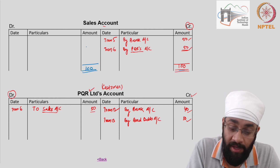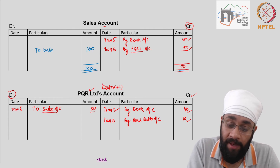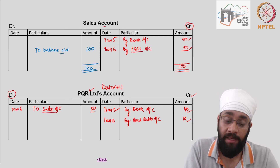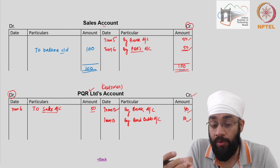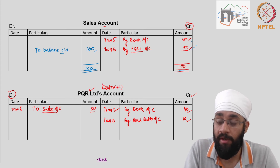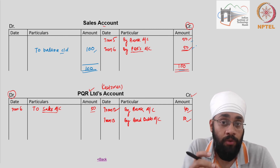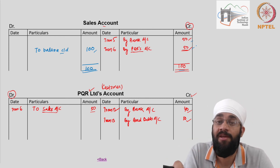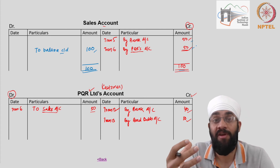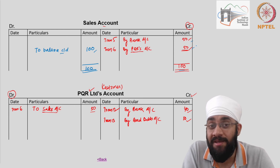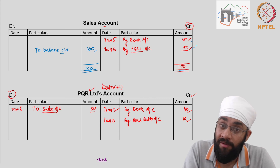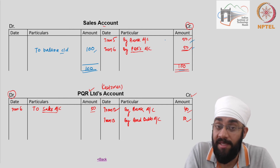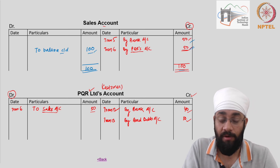For the sales account, you write 100 here as the total, sum up the debit side which is zero, and write the balance of 100 as 'to balance carried down.' This means after the 14 transactions the business conducted a total sale of 100 — part can be cash or credit, it doesn't matter. The accrual principle says: if you have transferred the goods and services and have a legal right to obtain money from the customer, you can consider this as sale, including credit sales.